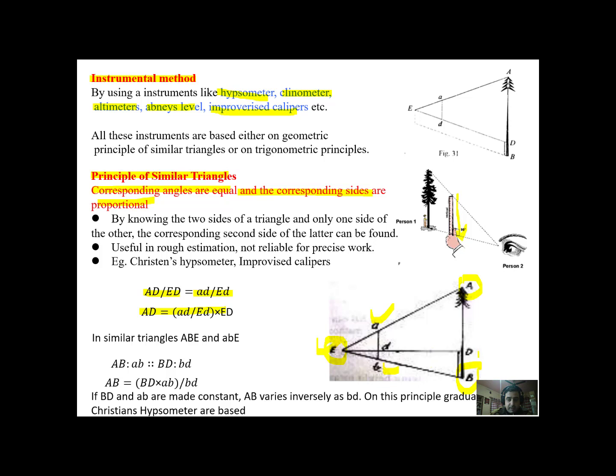What is AD? AD is the height of the tree up to your eye level. Now if you add your height up to the eye level to this AD you will get height of the tree.